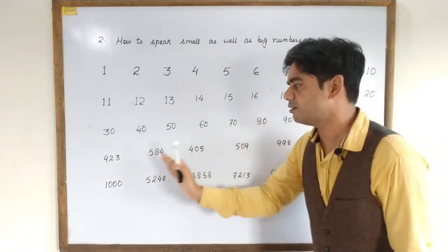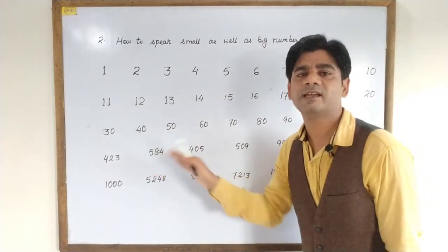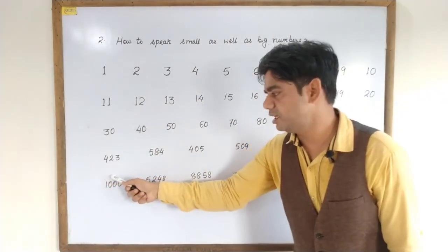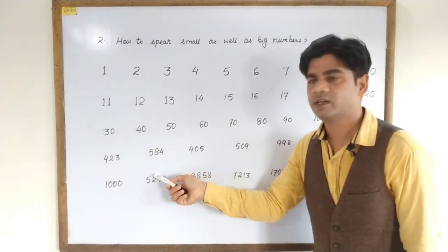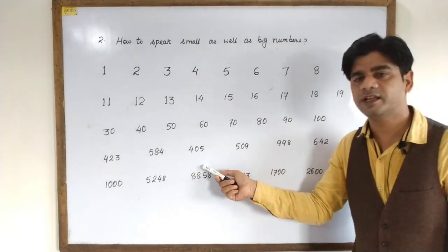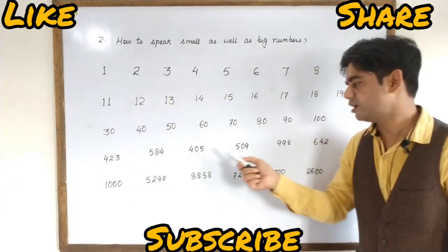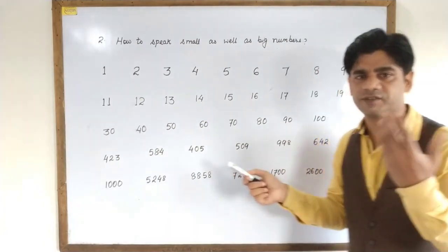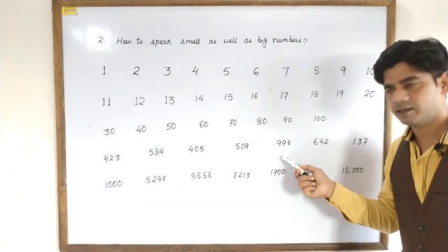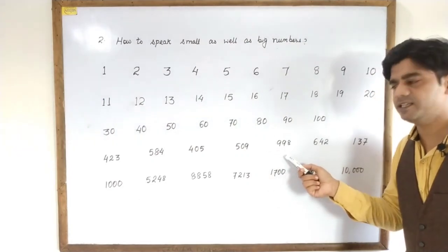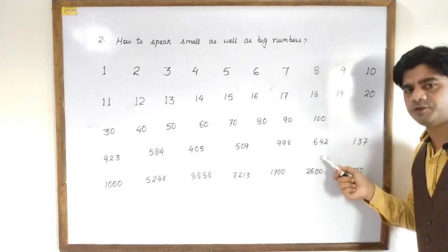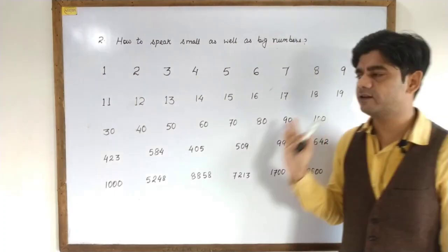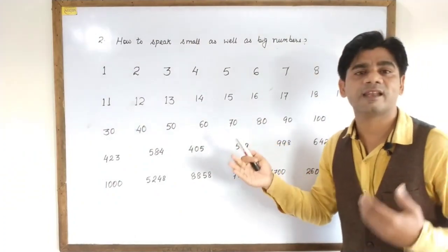Now we will try to pronounce three-digit numbers in an Indian accent. Four hundred twenty-three. Four hundred twenty-three. Five hundred eighty-four. Five hundred eighty-four. Four hundred five. Four hundred five. Five hundred nine. Five hundred nine. Nine hundred ninety-eight. Nine hundred ninety-eight. Six hundred forty-two. Six hundred forty-two. One hundred thirty-seven. One hundred thirty-seven.